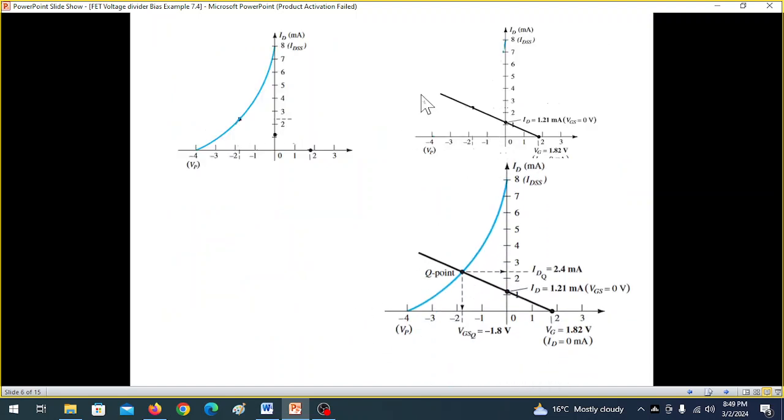And now we combine these two to find this graph. And wherever these two intersect, that is our Q-point. So you can see from here, IDQ is 2.4 milliampere and VGSQ is minus 1.8V. So that is our answer for the first part.